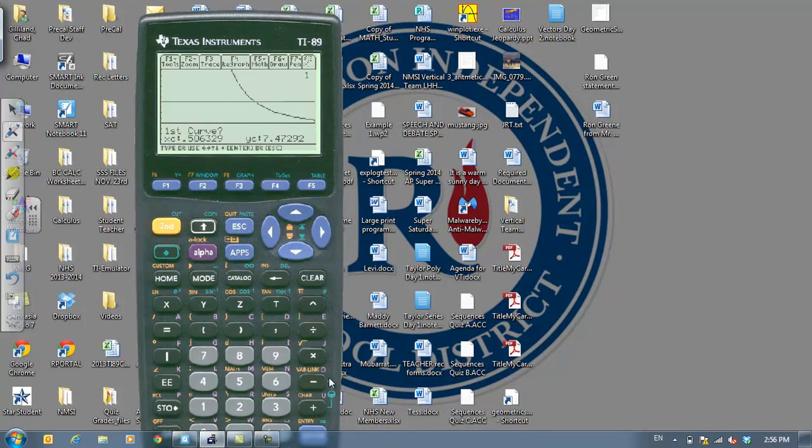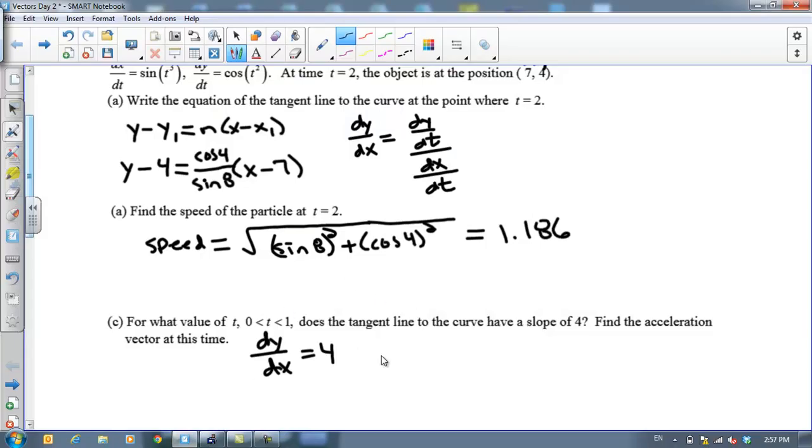Hit enter there. First curve, enter. Second curve, enter. Lower bound, we're just to the left of our intersection. And our upper bound is just to the right of our intersection. Keep in mind, these are going to be t values here. And I've got a t value of 0.616. So that's the time between 0 and 1 when the slope actually equals 4. So we've got this at t equals 0.616.